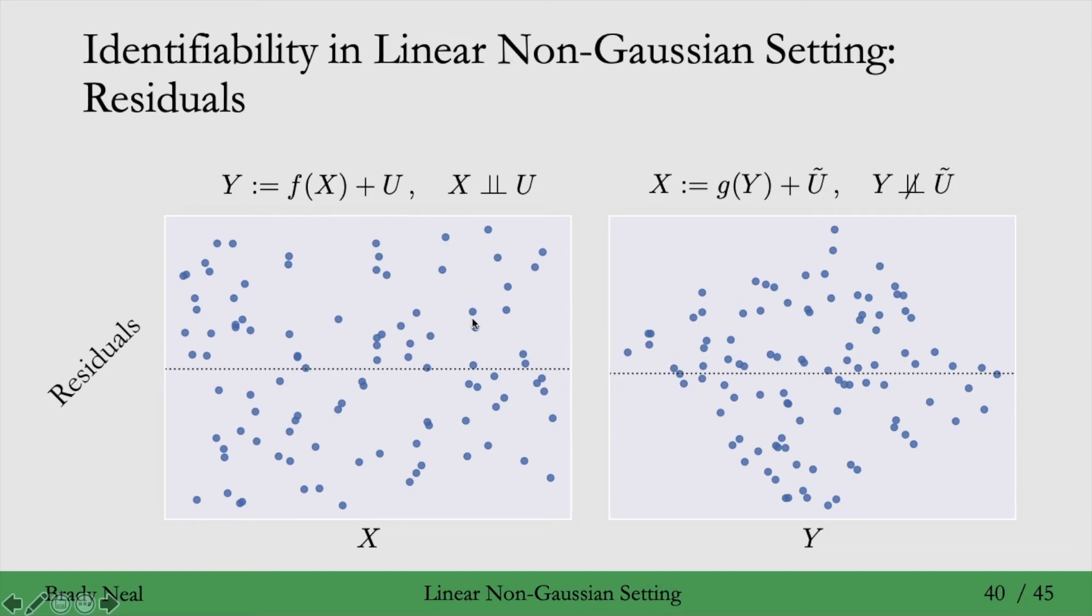So this looks pretty independent. The distribution of the residual U here doesn't seem to be changing as we condition on different values of X. So they're independent.